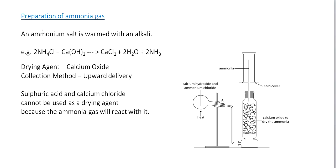How do we prepare ammonia gas? In order to prepare ammonia gas, an ammonium salt is warmed with an alkali. You need to remember this equation: 2NH4Cl + Ca(OH)2 → CaCl2 + 2H2O + 2NH3. So ammonium chloride reacts with calcium hydroxide to produce calcium chloride, water, and ammonia gas.